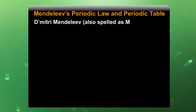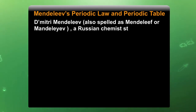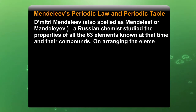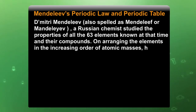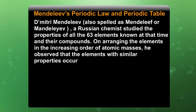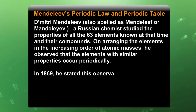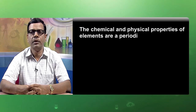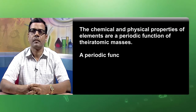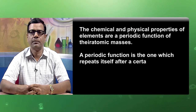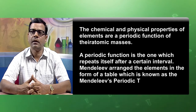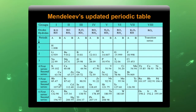Dmitri Mendeleev, a Russian chemist, studied the properties of all 63 elements known at that time and their compounds. On arranging the elements in increasing order of atomic masses, he observed that elements with similar properties occur periodically. In 1869, he stated this observation as Mendeleev's Periodic Law: the chemical and physical properties of elements are a periodic function of their atomic masses. The periodic function is one which repeats itself after certain intervals. Mendeleev arranged the elements in the form of a table known as Mendeleev's periodic table.